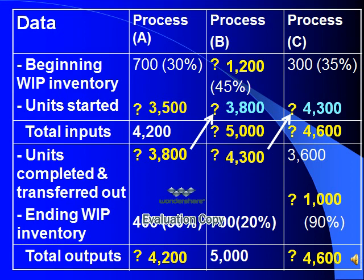In process C, units completed and transferred out from process B equal units started in process C, so units started in process C are 4,300 units. Plus beginning inventory of 300 units, total inputs equal 4,600 units. Total inputs equal total outputs, so total outputs in process C equal 4,600 units. Minus units completed and transferred out of 3,600 units equals ending inventory of 1,000 units.